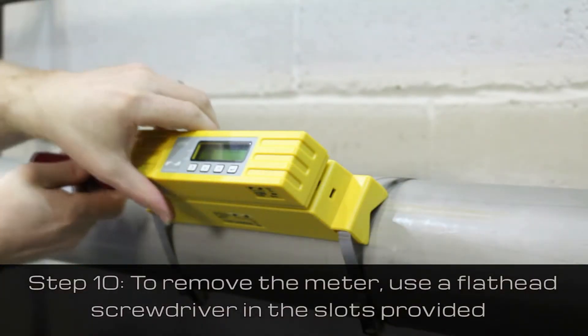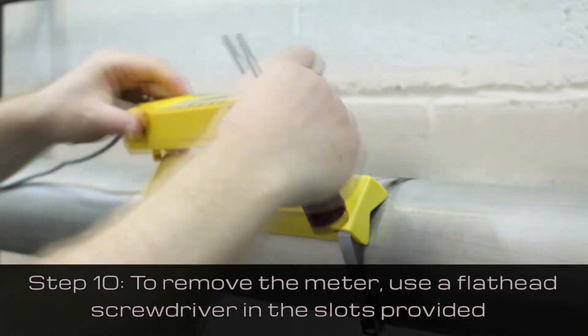To remove the meter from the guide rail, simply use a flathead screwdriver in the slots provided.